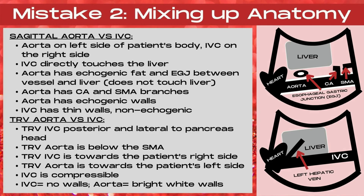Mistake number two when imaging the aorta is mixing up the anatomy. Commonly, when you're first learning how to image the aorta with ultrasound, the aorta and the IVC get mixed up. So let's talk about the sagittal aorta versus the sagittal IVC. The aorta is going to be a tube on the left side of the patient's body, while the IVC is going to be on the right side of the patient's body.